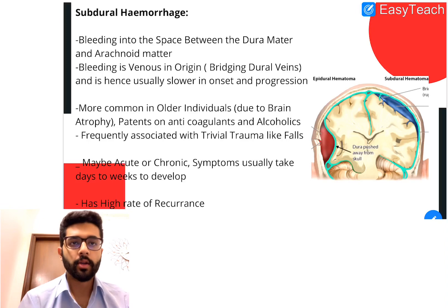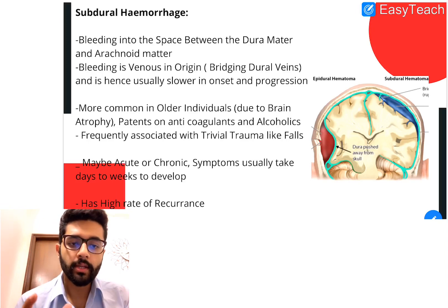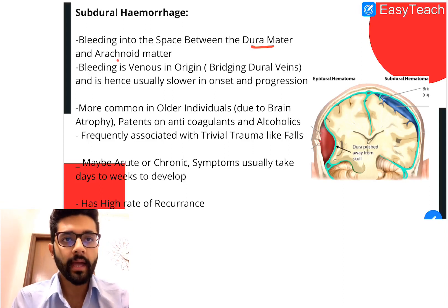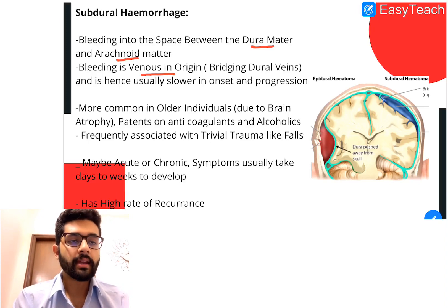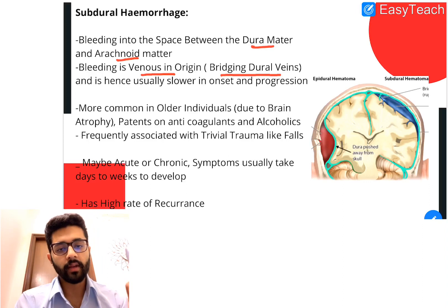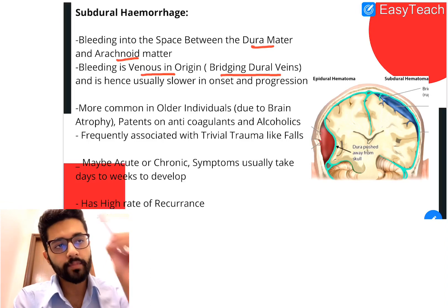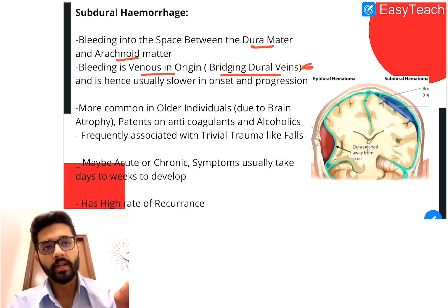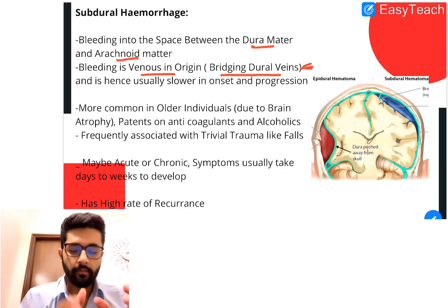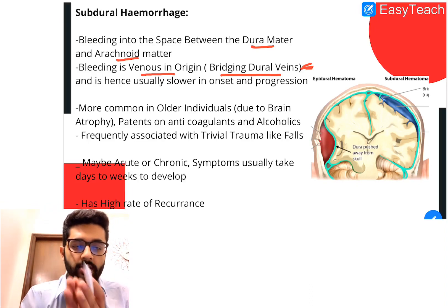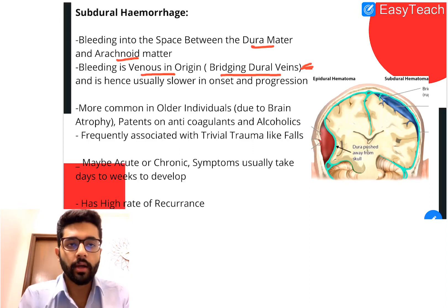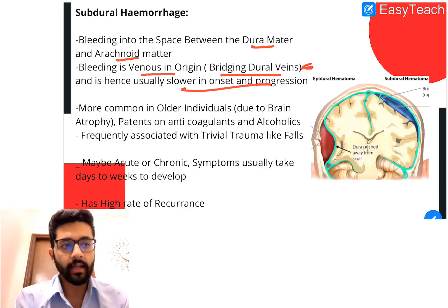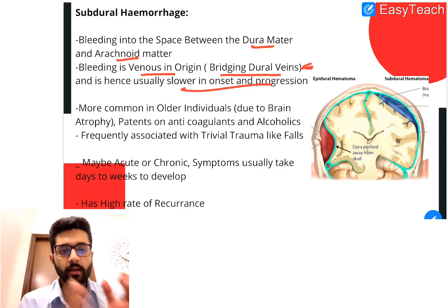Now let's move to subdural hemorrhage. This is bleeding into the subdural space — the space between the dura and the arachnoid. Unlike EDH, subdural hemorrhage is usually venous in origin, arising from the bridging dural veins which connect the cerebral veins to the dural venous sinuses. Because veins are low-pressure systems, venous bleeds are slower, giving a slower or more gradual onset and progression.